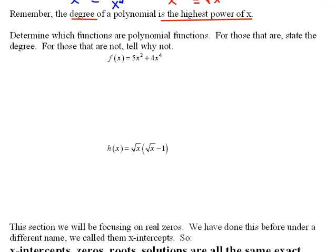This one says, determine which functions are polynomial functions. For those that are, state the degree. For those that are not, tell why not. So, we have our first function here that says 5x squared plus 4x to the 4th. This is a polynomial. It is a polynomial because all of our powers of x are non-negative integers.